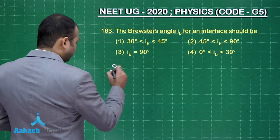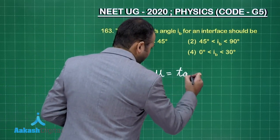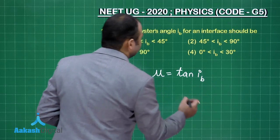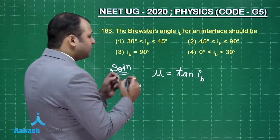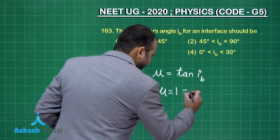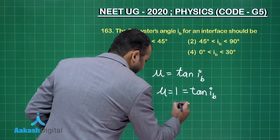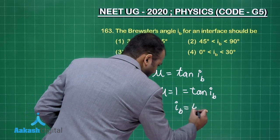Let's see the solution. As we are aware, as per Brewster's law, μ should be equal to tan IB, right. Now what is the minimum value of μ which is possible? We all are aware that is 1. In that case tan IB will be equal to 1. So the minimum value of IB will be equal to 45 degrees.